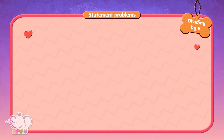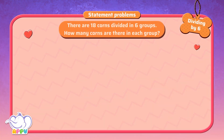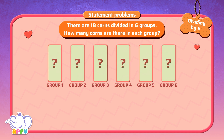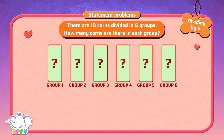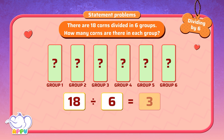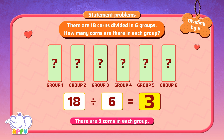There are 18 corns divided in 6 groups. How many corns are there in each group? To find the number of corns in each group, we divide 18 equally among 6 groups. There are 3 corns in each group.